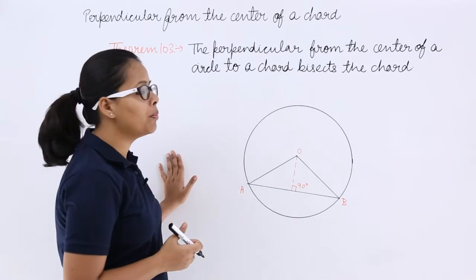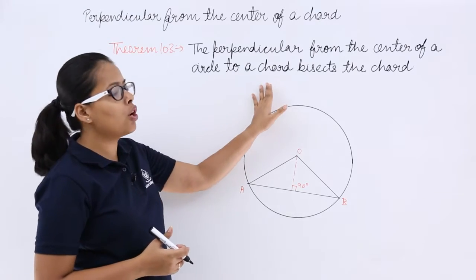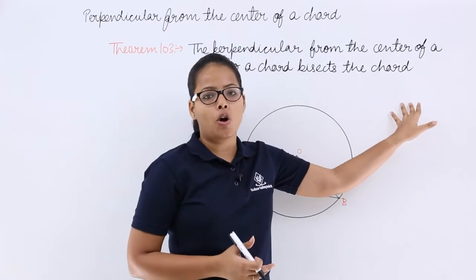This theorem, Theorem 10.3, says the perpendicular from the center of a circle to a chord bisects the chord.